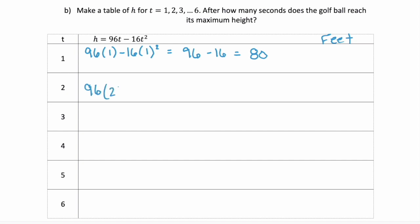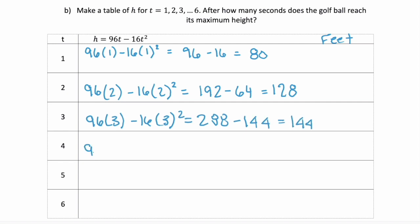96 times 2 minus 16 times 2 squared equals 192 minus 64, which is 128 feet. We have 96 times 3 minus 16 times 3 squared equals 288 minus 144 equals 144. And we keep going.